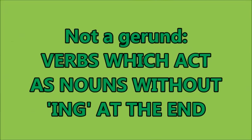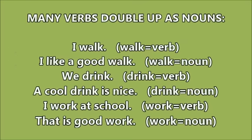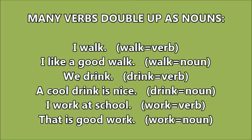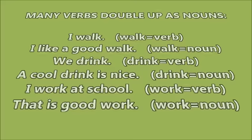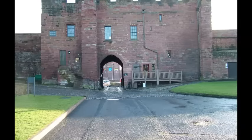It's not telling us what's happening in the sentence, so it's not a gerund. Verbs which act as nouns without -ing at the end are not gerunds. 'I walk' — walk is acting as a verb. 'I like a good walk' — walk is acting as a noun. 'We drink' — verb. 'A cool drink is nice' — noun. 'I work at school' — verb. 'That is good work' — noun. But these are not gerunds.